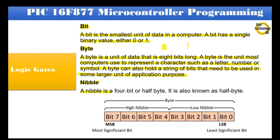Nibble: A nibble is 4 bits, or half a byte. As shown in the diagram, one byte of data holds 8 bits — from bit 0 through bit 7. Bit 0 to bit 3 are the low nibble, and bit 4 to bit 7 are the high nibble. Bit 0 is the LSB (Least Significant Bit), and bit 7 is the MSB (Most Significant Bit).